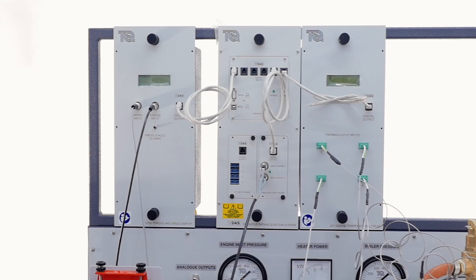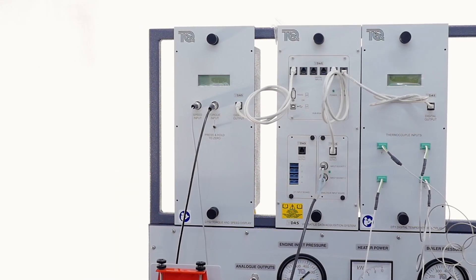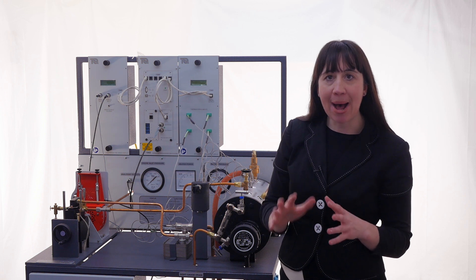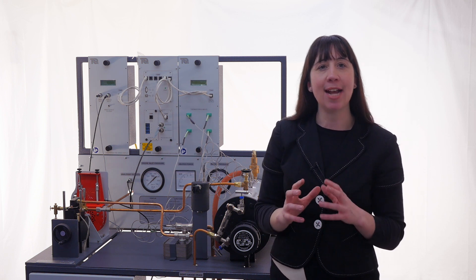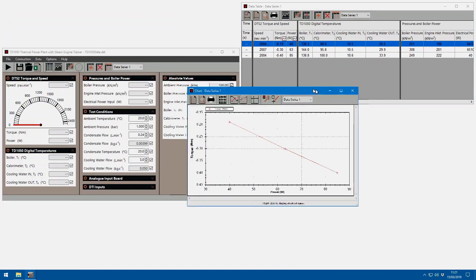On the rear control panel is the torque and display instrument that calculates and displays the engine speed, torque and power. A digital output socket here connects to the optional versatile data acquisition system also known as VDAS.